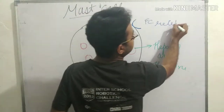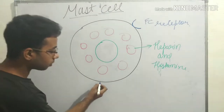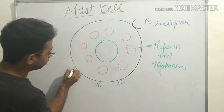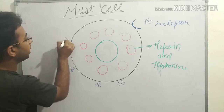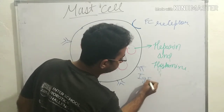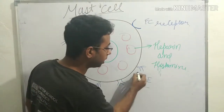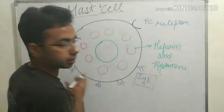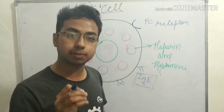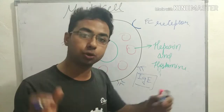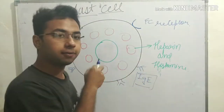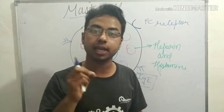Mast cells also carry antibodies on their surface — the whole surface of the mast cell is covered with IgE antibody (Immunoglobulin E). IgE is produced by plasma cells, which are derived from B lymphocytes. These IgE antibodies cover the whole surface of the mast cell and play a very important role in the inflammatory reactions caused by mast cells.